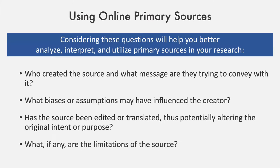Now that you've located and evaluated the online primary sources, it is time to use them. Primary sources in general are the building blocks of historical research and should provide the foundation that your arguments, interpretations, and theories are based upon. Primary sources should be used to drive your research and serve as the evidence for the case that you're trying to make. Once identified, it's necessary to examine the online primary source itself with a critical eye. Some questions that might help guide this process are: Who created the source and what message are they trying to convey? What biases or assumptions may have influenced the creator? Has the source been edited or translated, thus potentially altering the original intent or purpose? And what, if any, are the limitations of this source? Considering questions such as these will help you better analyze, interpret, and utilize the primary sources in your research.